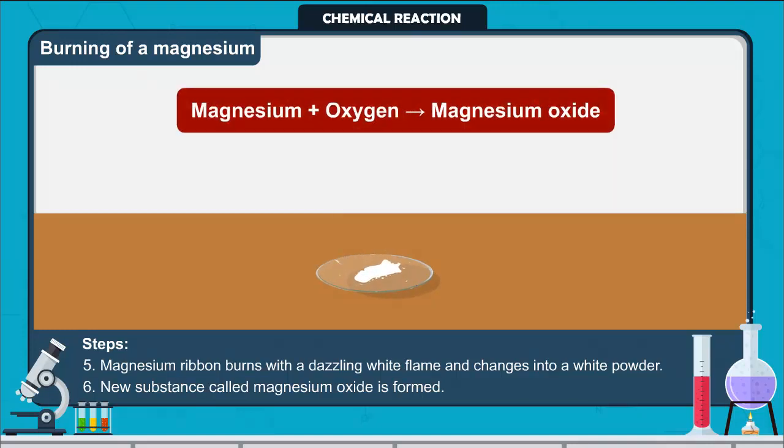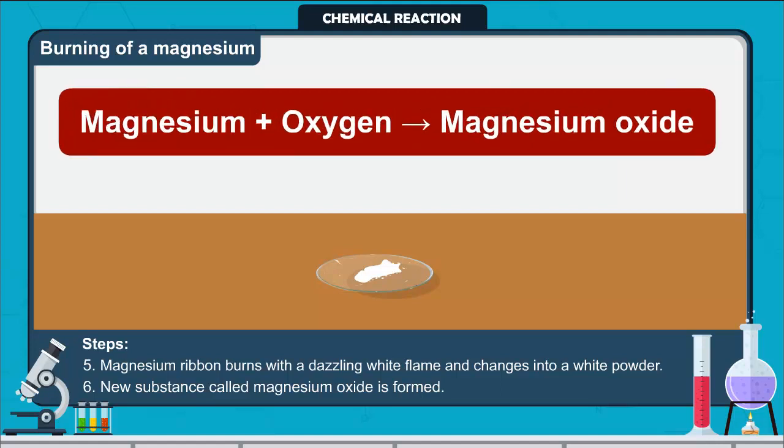It is a state change of magnesium to magnesium oxide. The substances which take part in a chemical reaction are called reactants. The new substances produced as a result of a chemical reaction are called products.